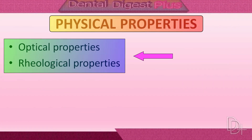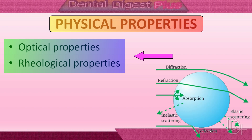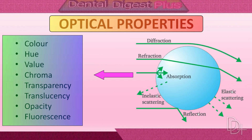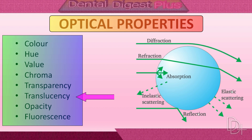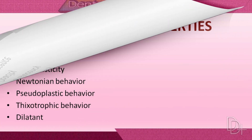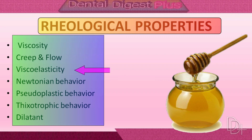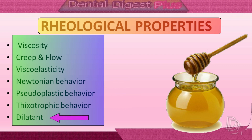Physical properties of dental materials include optical properties and rheological properties. Under optical properties, we will learn about color, hue, value, chroma, transparency, translucency, opacity, and fluorescence. Under rheological properties, we will learn about viscosity, creep and flow, viscoelasticity, Newtonian behavior, pseudoplastic behavior, thixotropic behavior, and dilatant.